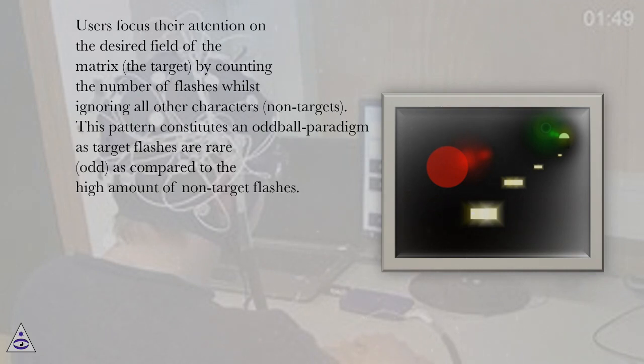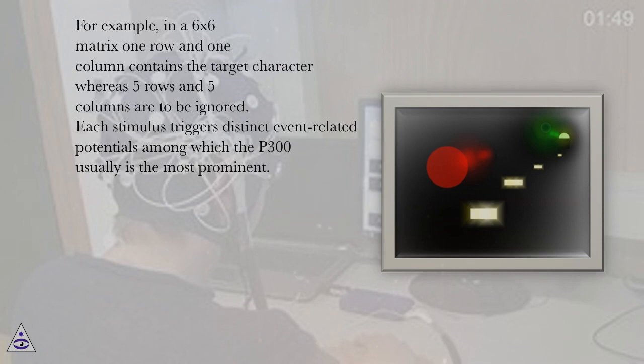This pattern constitutes an oddball paradigm as target flashes are rare, odd, as compared to the high amount of non-target flashes. For example, in a 6x6 matrix 1 row and 1 column contains the target character whereas 5 rows and 5 columns are to be ignored.